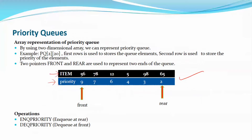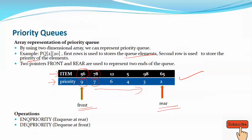As you can see here, this is the array type representation. This is a two-dimensional array — two rows will be there. In the first row, the item will be displayed, and in the second row, the priority will be displayed in the corresponding column. The priority is stored in decreasing order, so that the highest priority element is processed first.